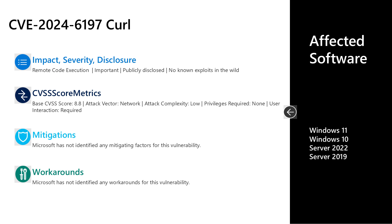The next issue is CVE-2024-6197, a remote code execution vulnerability listed as important severity. This one is publicly disclosed with no known exploits in the wild. It is a vulnerability in CURL, an open source project that Microsoft consumes in Windows. It has a CVSS base score of 8.8. The attack vector is over the network, attack complexity is low, no privileges are required, but user interaction is required. There are no known mitigations or workarounds. The affected software is Server 2019, Server 2022, Windows 10, and Windows 11.